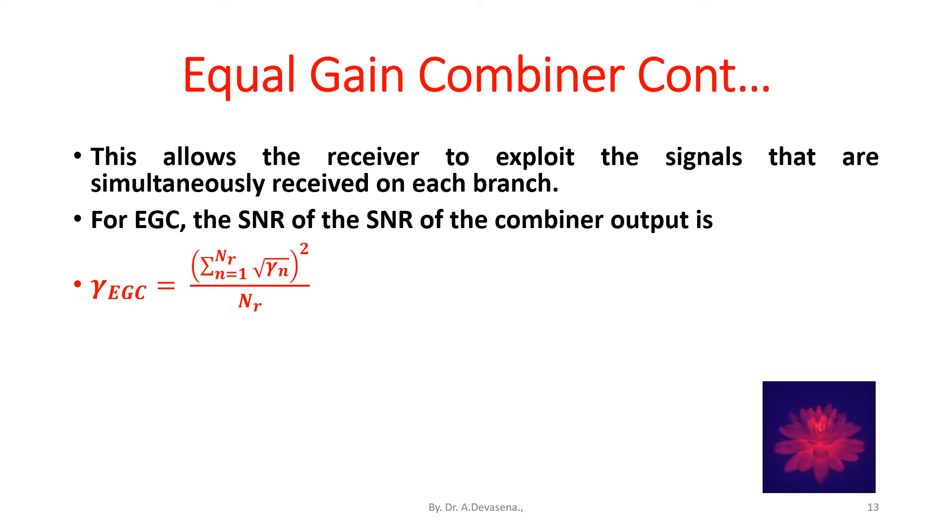The mean SNR is gamma bar_EGC is equal to gamma bar open bracket 1 plus open bracket N_R minus 1 close bracket into pi by 4 close bracket.